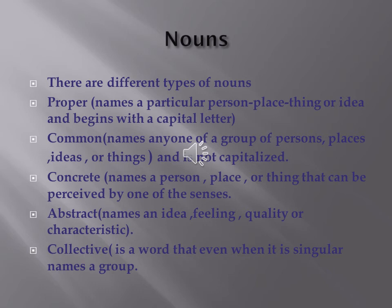Nouns. There are different types of nouns. A proper noun names a particular person, place, thing, or idea and begins with a capital letter. A common noun names anyone of a group of persons, places, ideas, or things and is not capitalized.